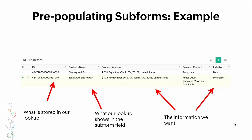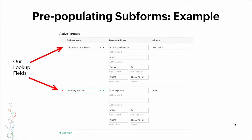Here's the visual for that. We have a table with two records. Under the record ID on the left side is what's going to be stored in our lookup. What our lookup shows in the subform field is the second column with the business name, and the information we want to pull are the business address and the industry fields.